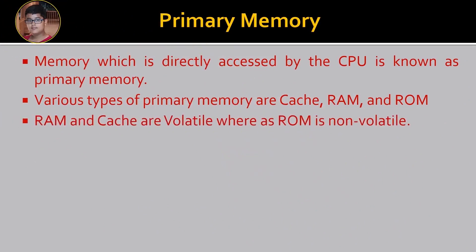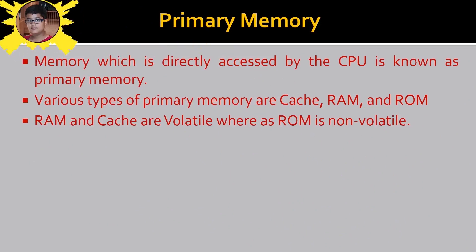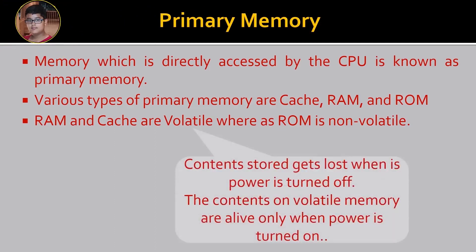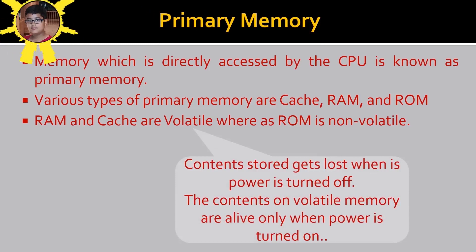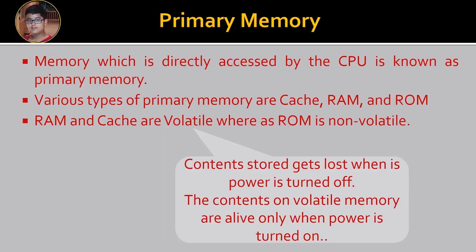RAM and cache are volatile whereas ROM is non-volatile. Volatile means that the contents stored get lost when the power is turned off. The contents from volatile memory are alive only when the power is turned on.